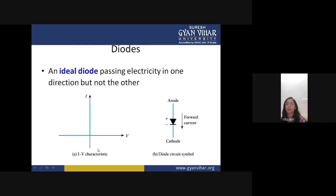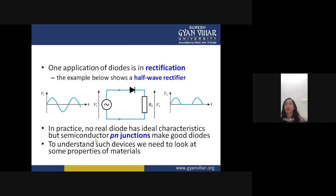This is the ideal I-V characteristic of the diode. We take voltage on the x-axis and current on the y-axis. When we draw the graph between voltage and current, we get this curve which represents the ideal forward bias characteristic.